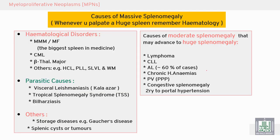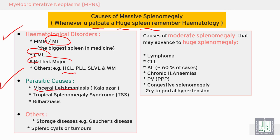Causes of massive splenomegaly — a palpable, very large spleen — in hematological disorders include myelofibrosis (the biggest spleen is seen in myelofibrosis), chronic myeloid leukemia, beta-thalassemia major, and hairy cell leukemia. Parasitic diseases such as visceral leishmaniasis, tropical splenomegaly, and schistosomiasis (in Egypt) are also causes, as are storage diseases like Gaucher disease and splenic cysts or tumors.